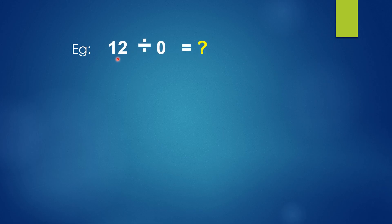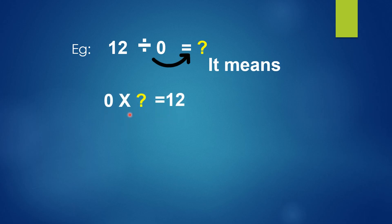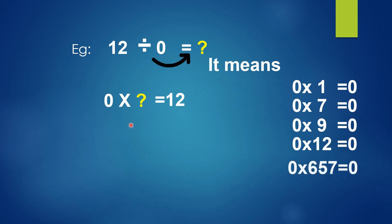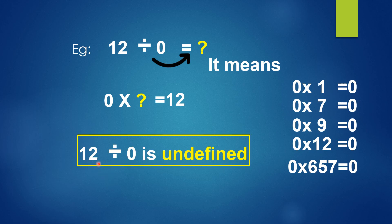Let's take another example: twelve divided by zero. Zero times some number must equal twelve. Using the zero table: zero times one is zero, zero times seven is zero, zero times nine is zero, zero times twelve is zero, zero times 657 is zero. We never get twelve. So twelve divided by zero is undefined — you can't define it.